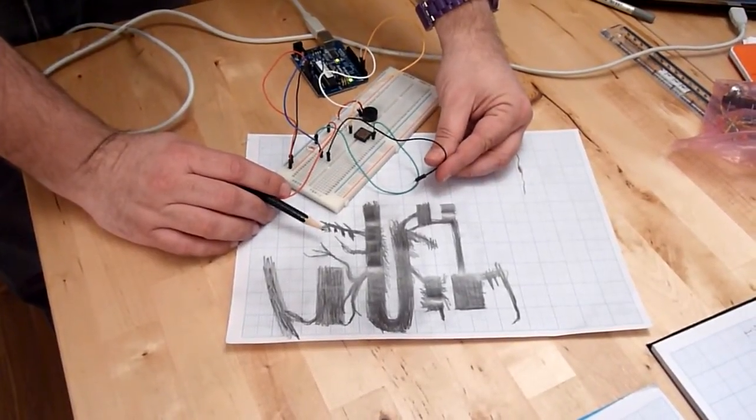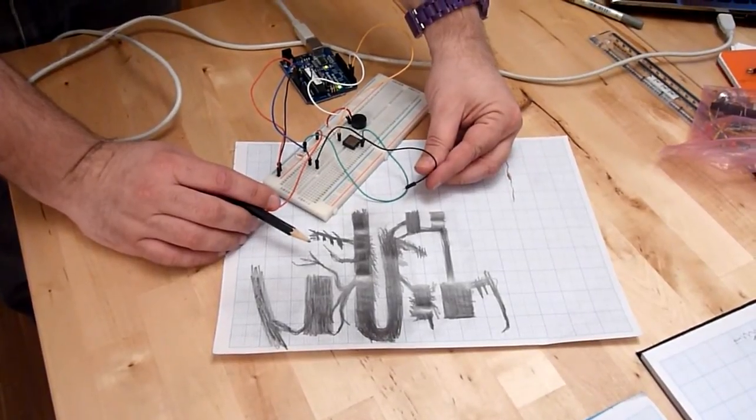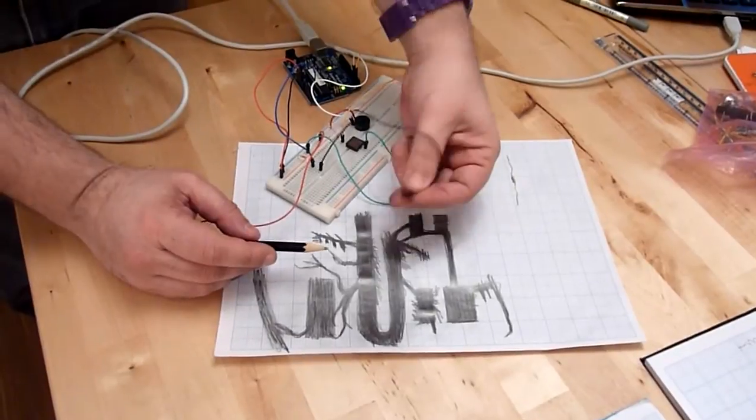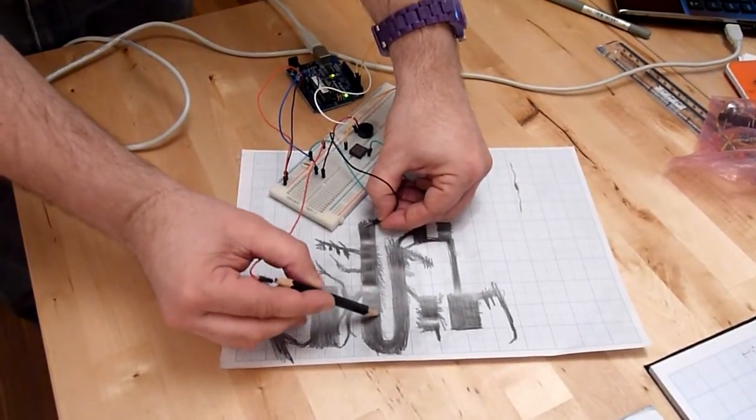Ok so I'm demonstrating the use of graphite as a resistance and basically we have a resistance between this contact here and the graphite pencil here.